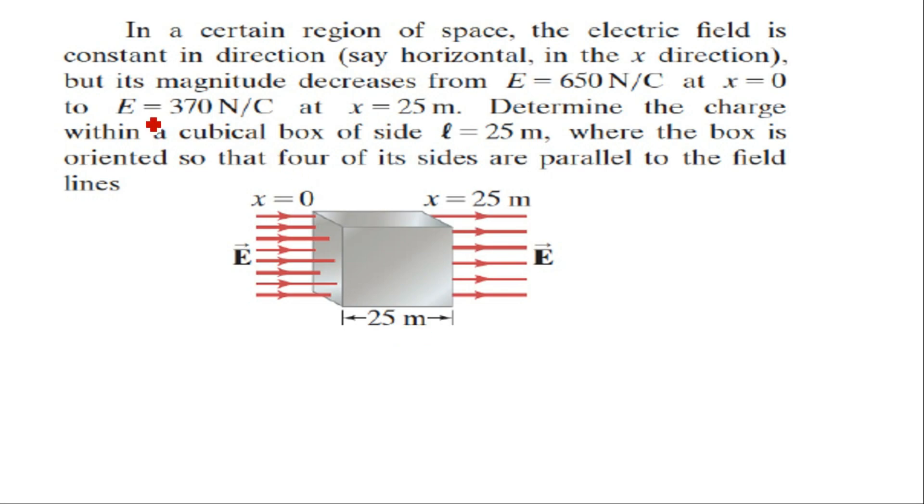The electric field is given to be 650 Newton per coulomb at this left face of the cube and it decreases to 370 Newton per coulomb at x equals 25, that is the right face of the cube.